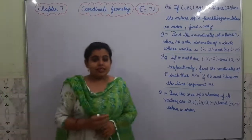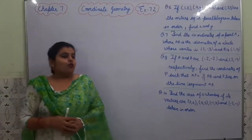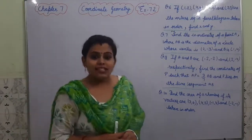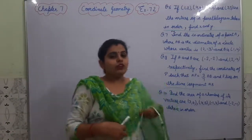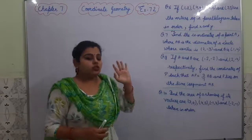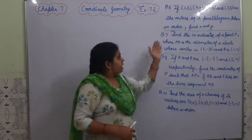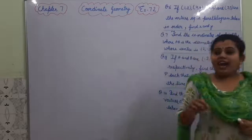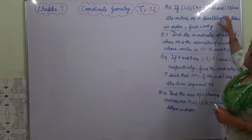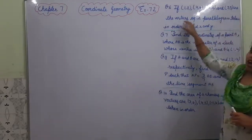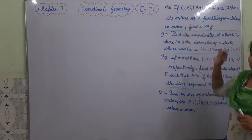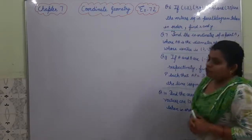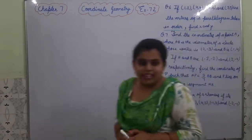Hello, we will do question number 6 of exercise 7.2. What is asked in this question? If (1,2), (4,5), (x,6) and (3,5) are the vertices of a parallelogram taken in order, find x and y.